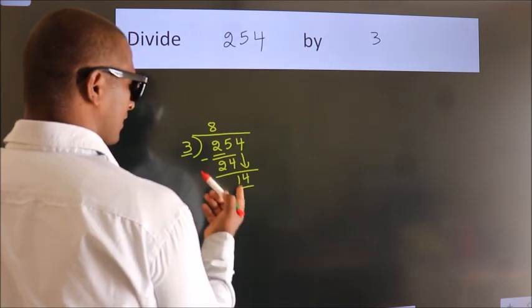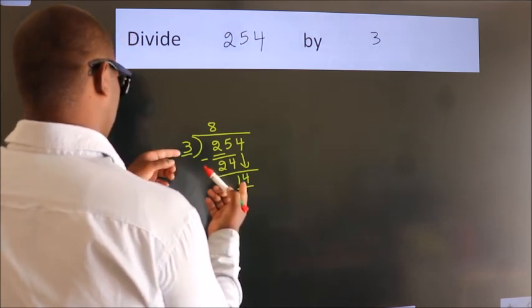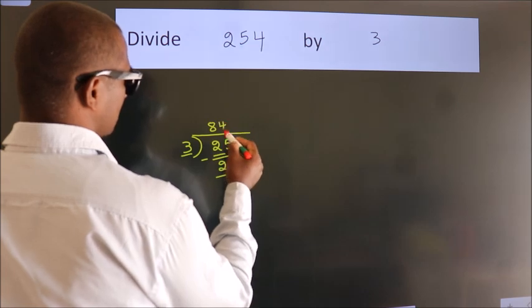So, 14. A number close to 14 in the 3 table is 3 times 4, which is 12.